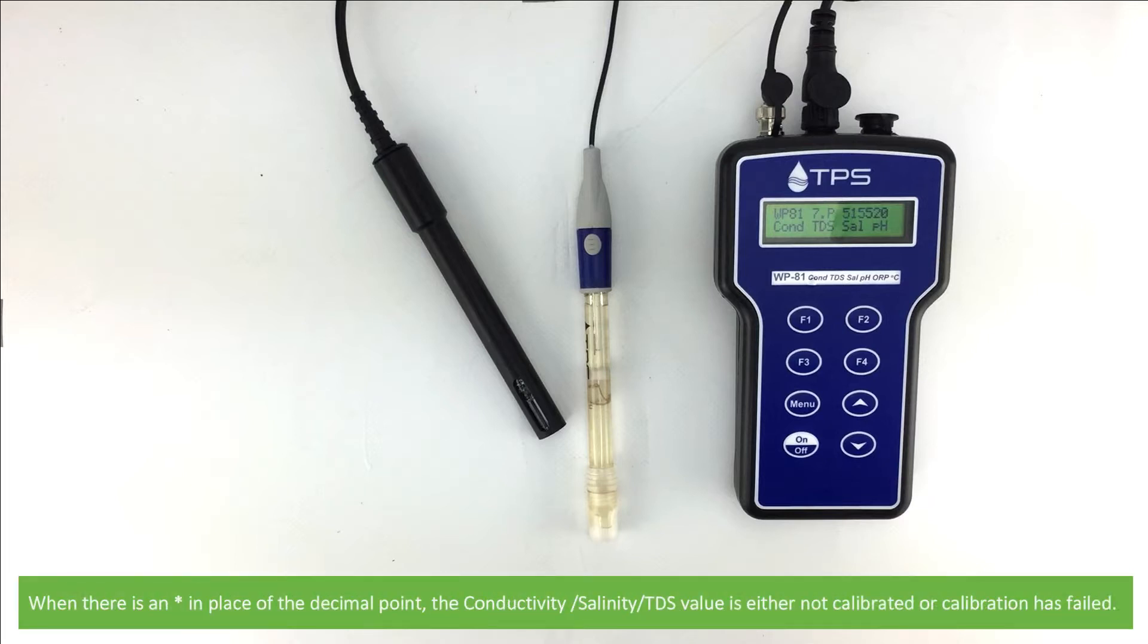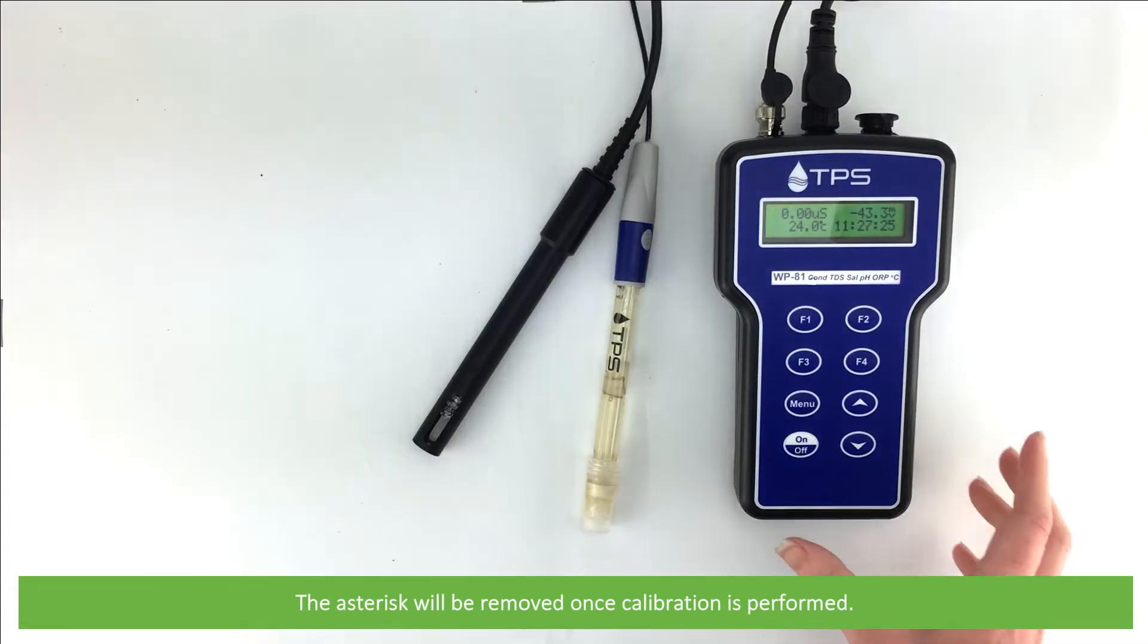When there is an asterisk in place of the decimal point, the conductivity, salinity, or TDS is either not calibrated or calibration has failed. The asterisk will be removed once calibration is performed.